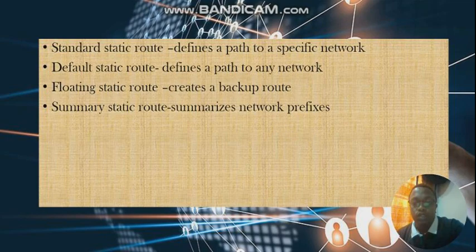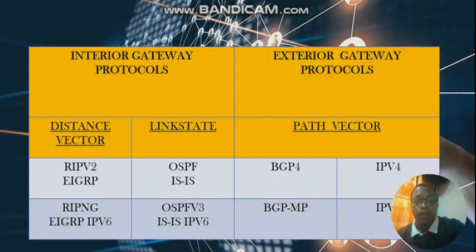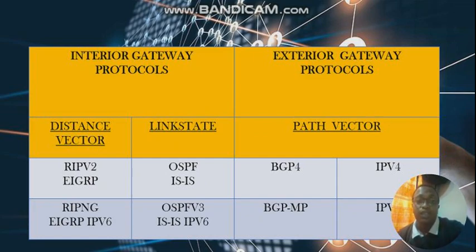Talking about routing protocols, we have two types. Interior Gateway Protocols, or IGPs, are protocols that help us communicate within internal networks — for example, when you have two routers in one network. We also have Exterior Gateway Protocols, or EGPs, which help us connect outside our networks into the internet.